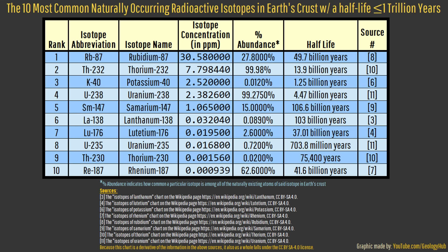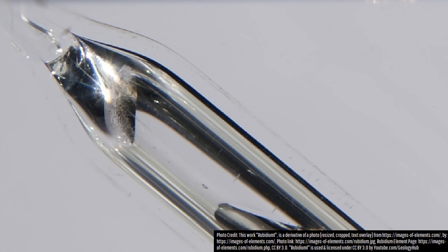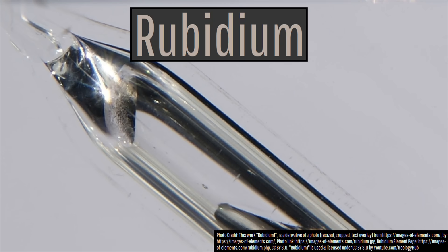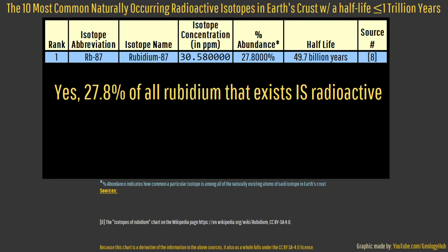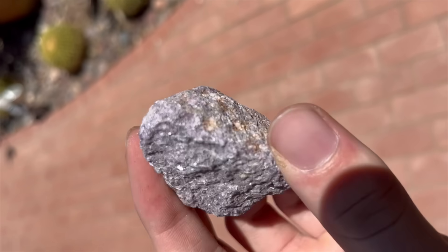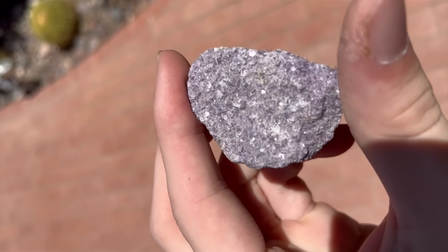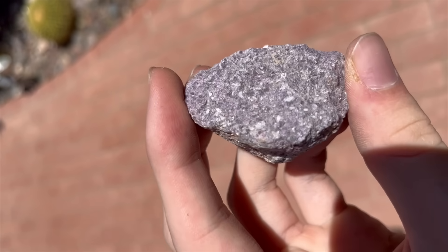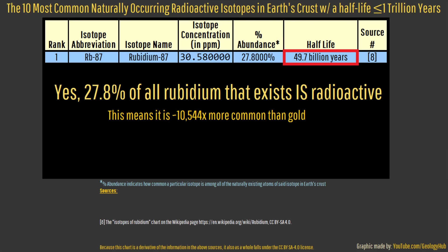Surprisingly, an isotope of an element few people have ever heard of, rubidium — specifically rubidium-87 — is the most common easily measurable radioactive isotope in the earth's crust. With a concentration of 30.58 parts per million, rubidium-87 is more than twice as common as all the world's naturally occurring crustal uranium and thorium isotopes combined. Since rubidium is a trace component in some but not all lepidolite deposits, it is one reason why some pegmatites are slightly radioactive. However, its half-life is more than three times as long as the age of the universe.